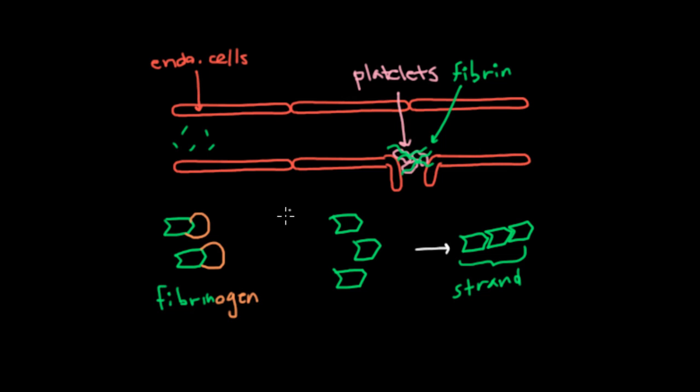And it's only when you convert fibrinogen to actual fibrin that the units can join together and form a strand. And so again, to repeat, you don't have fibrin circulating in your blood. You actually have fibrinogen.